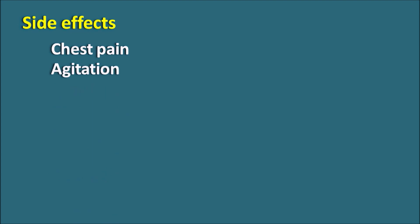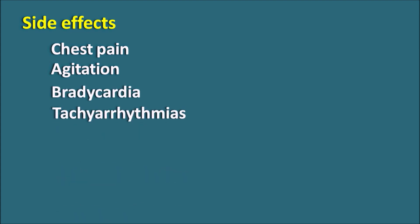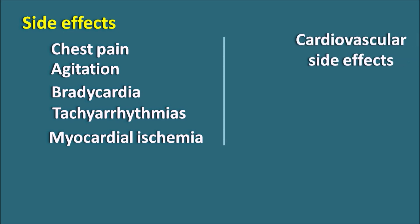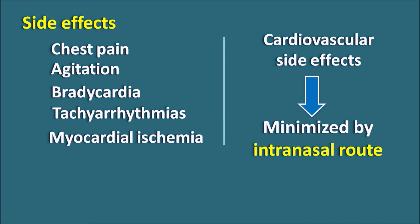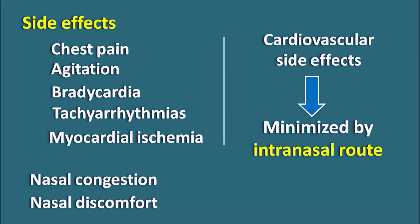What are the side effects? The side effects are mainly chest pain and agitation, because V1 receptors are responsible for cardiac stimulation and increased inotropic activity. It can also result in bradycardia, or sometimes tachyarrhythmias, and decreased cardiac output. Myocardial ischemia is one of the important side effects produced by vasopressin and its analogs, and this ischemia may also lead to angina in patients. These cardiovascular side effects can be minimized by administering the drug by the intranasal route. Other side effects include nasal congestion, nasal discomfort, hypertension, and back pain.